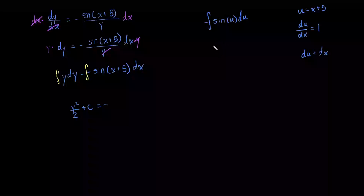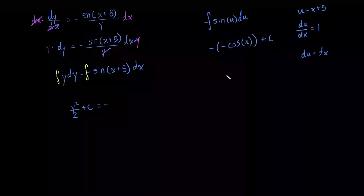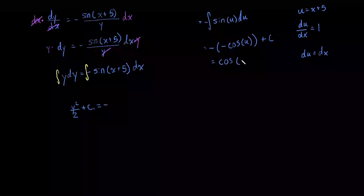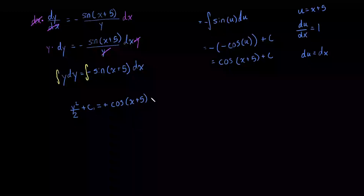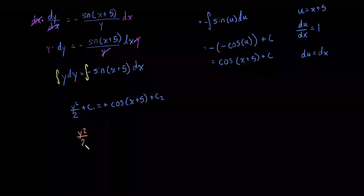The integral of sine of u is negative cosine of u. So we're left with negative times negative cosine of u, which gives positive cosine of u. We replace u — u is equal to x plus 5 — so we have cosine of x plus 5, plus c.